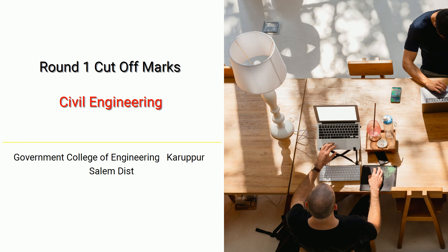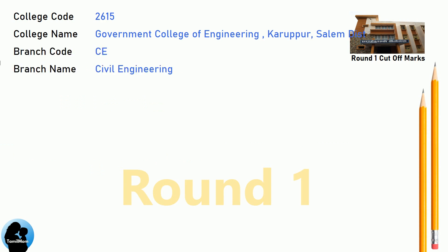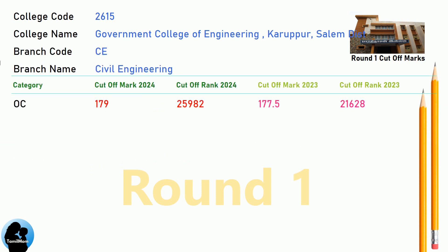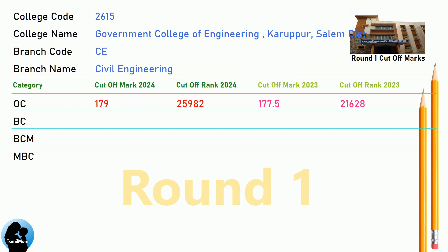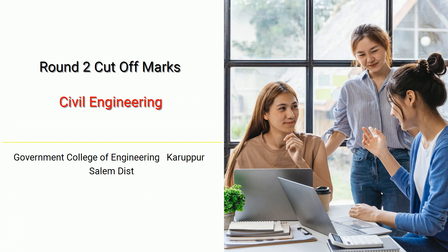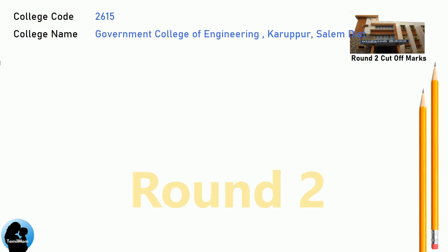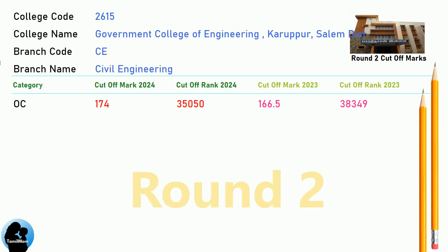DNA Round 1 Cut-off for Government College of Engineering, Karupur, Salem District in Civil Engineering. DNA Round 2 Cut-off for Government College of Engineering, Karupur, Salem District in Civil Engineering.